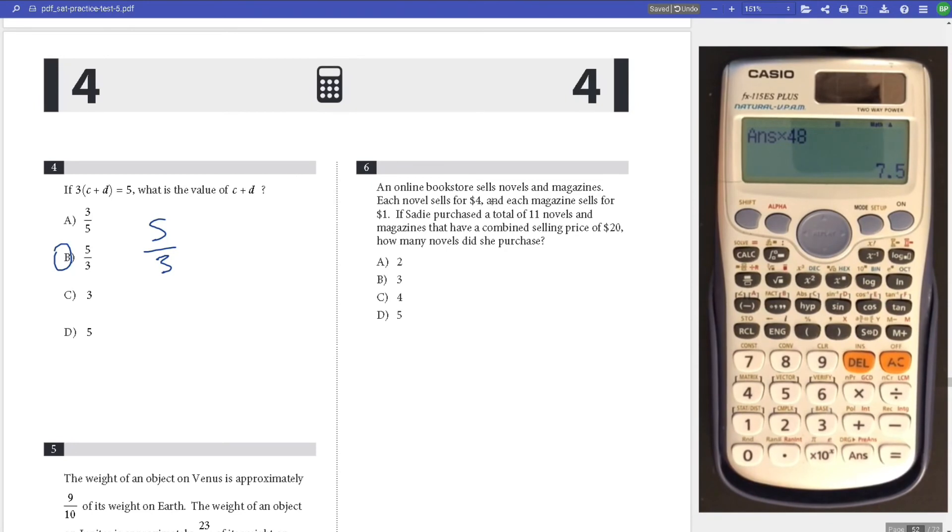Number 6, bookstore sells novels and magazines. Each novel sells for $4 and each magazine sells for $1. He purchases a total of 11 novels and magazines with a combined selling price of $20. How much does he purchase? This is a system. 4N plus M equals 20, and N plus M equals 11. Subtract these, get 3N equals 9, N equals 3. Answer is B.